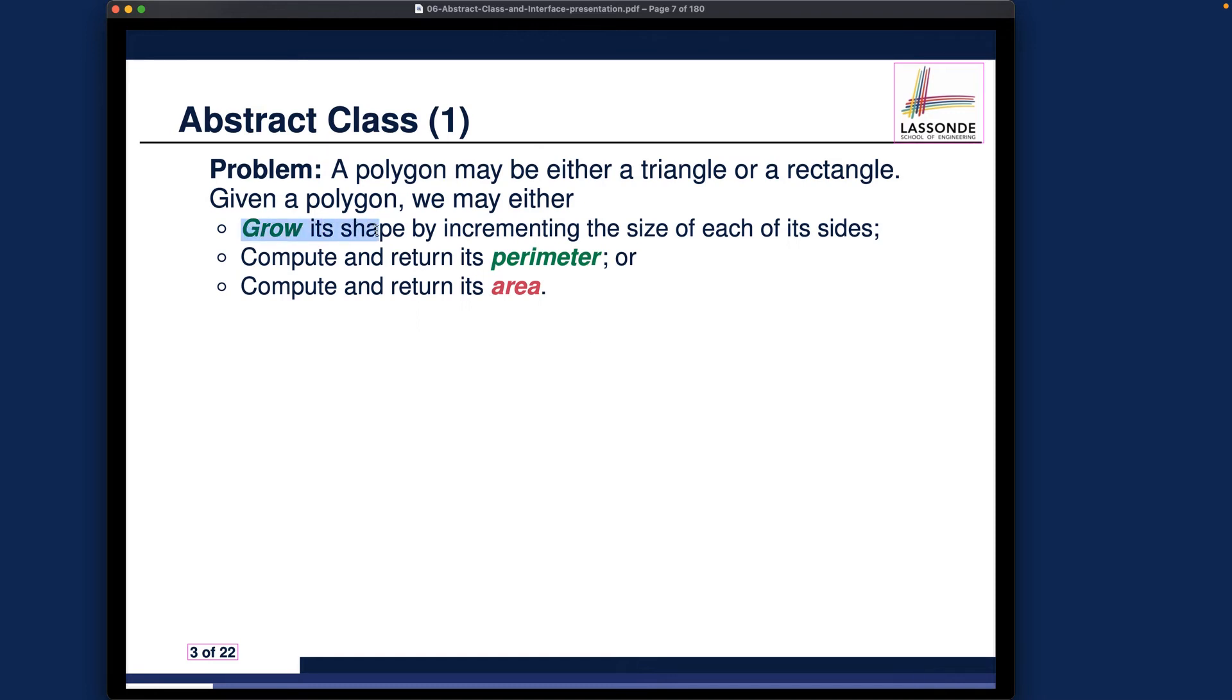For each polygon, we may want to grow its shape by incrementing the size of each of the sides. For example, if you got a triangle, a three-four-five triangle, you may want to increase it to six-eight-ten. Or you may want to compute and return its perimeter, just the summation of the sides. Or you may want to compute its area. I want to give you one question right away. You can pause the video and think about it.